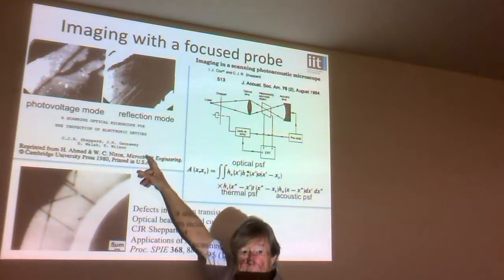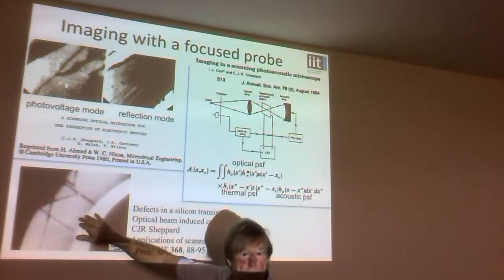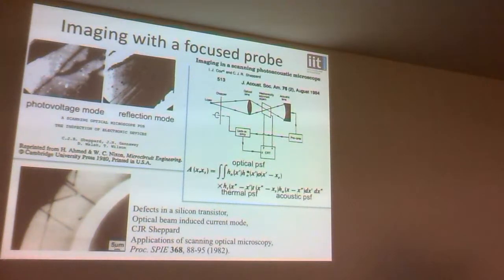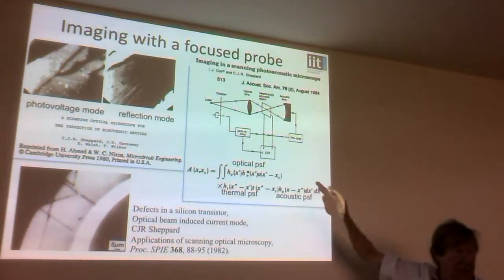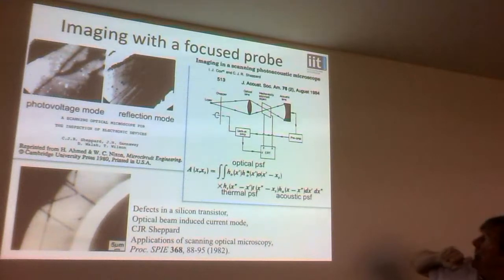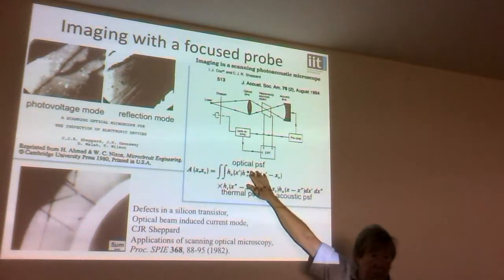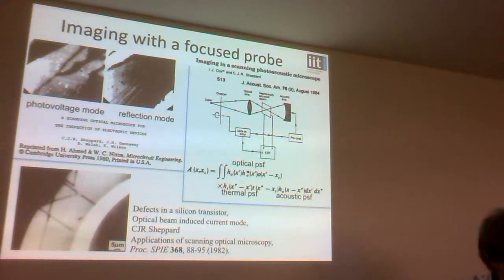Here are a couple of examples looking at semiconductors where you can use that focused spot of light to excite electronic effects in the sample. This is a transistor where these dark lines are actually defects in the silicon seen by this method. This is another one — a photoacoustic microscope, which has actually been around for a very, very long time. We had this paper in 1984, my student Ingemar Cox. The key point is that this complete system involves the optical, thermal, and acoustic properties of the sample, all combined in affecting the image.